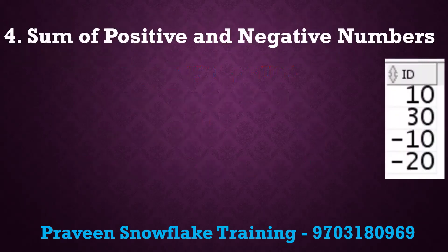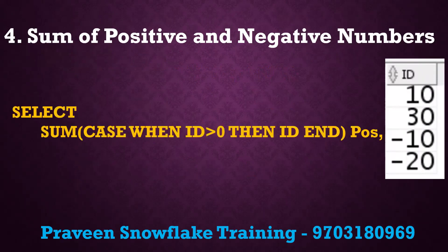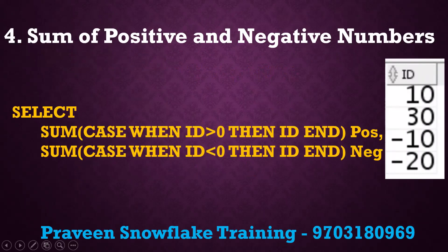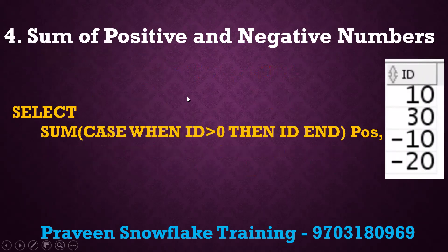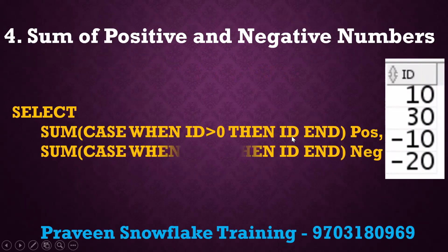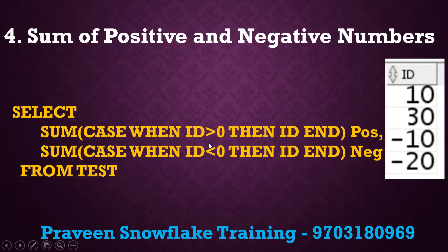The fourth question is about the sum of positive and negative numbers. If a column has values like 40 and -30, we use SUM with CASE: CASE WHEN id > 0 THEN id END for positives, and CASE WHEN id < 0 THEN id END for negatives. This lets you separately compute the sum of positive and negative values.